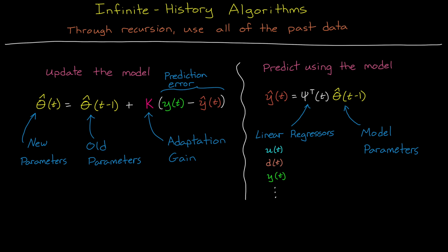Okay, so we have this general form of the infinite history recursive algorithm, but how do we set it up? That is, how do we choose the adaptation gain so that the parameters are updated appropriately based on the prediction error each time step?